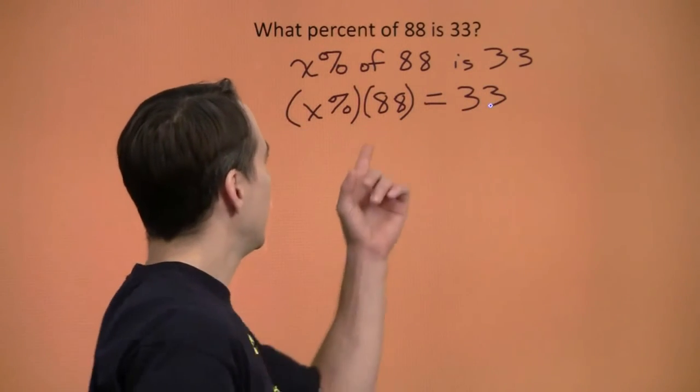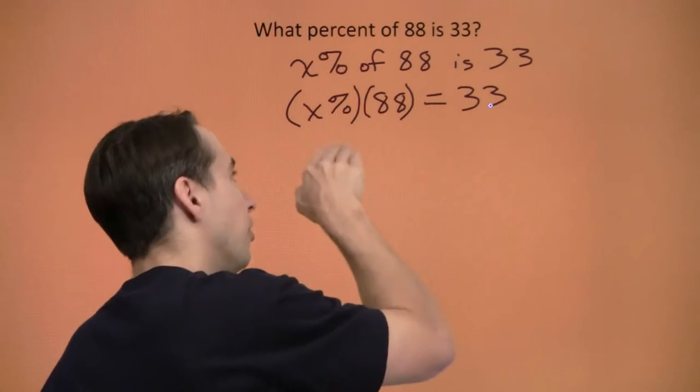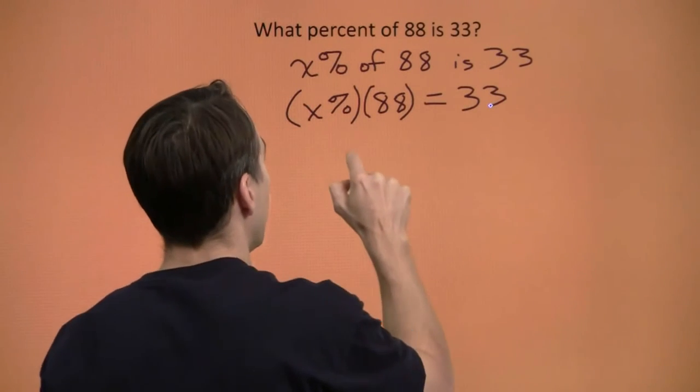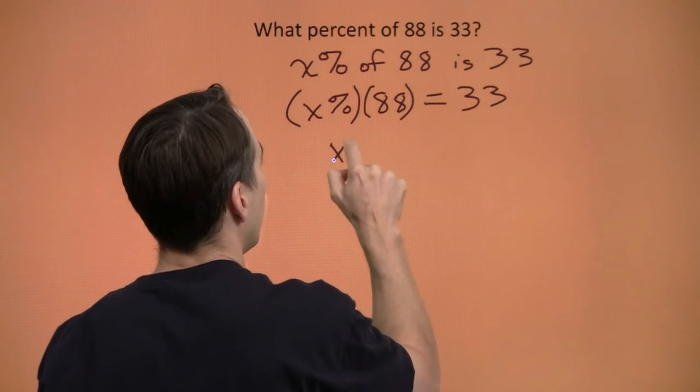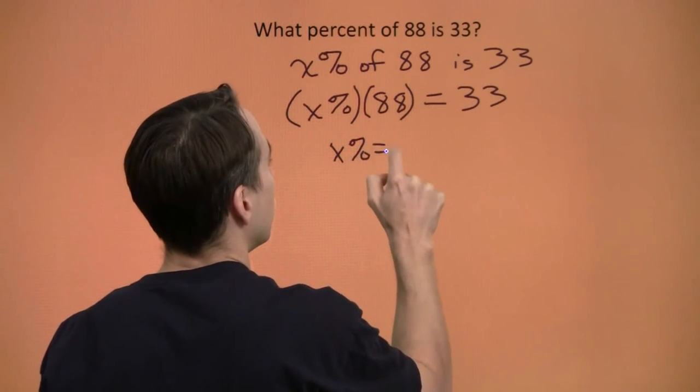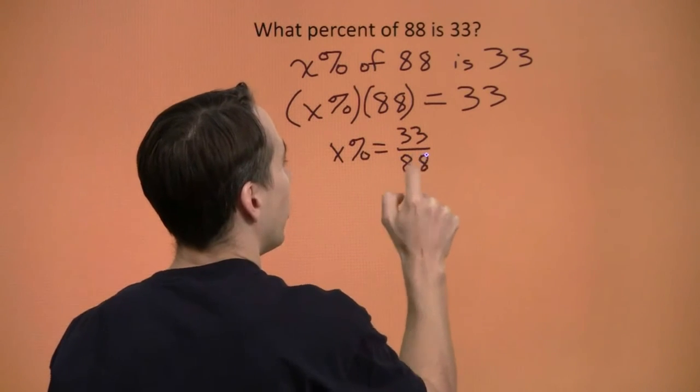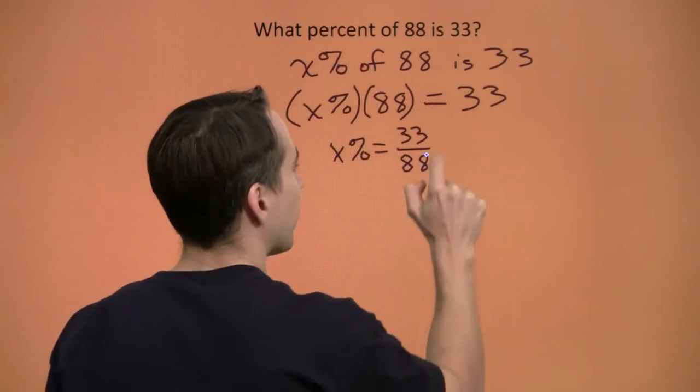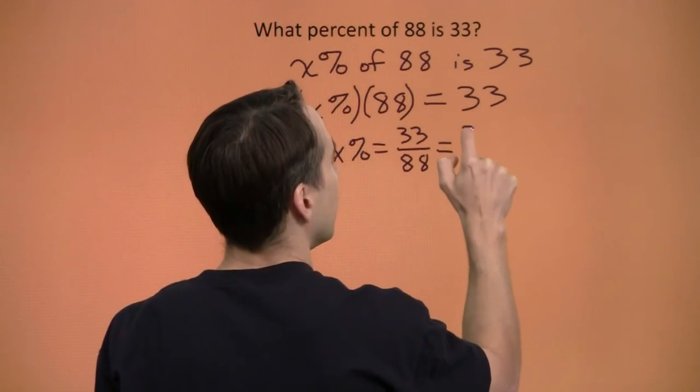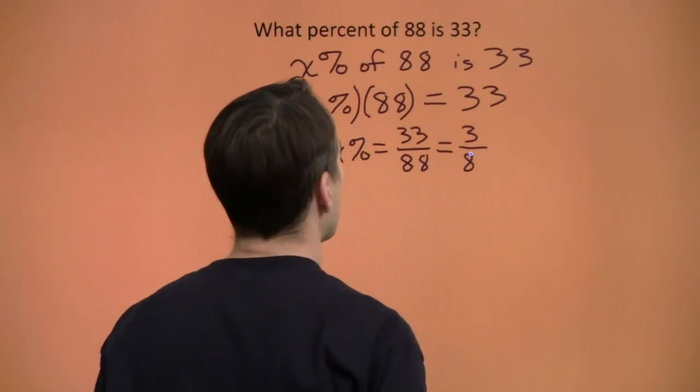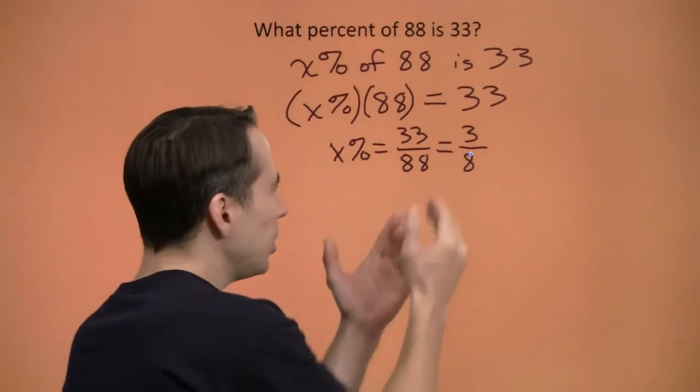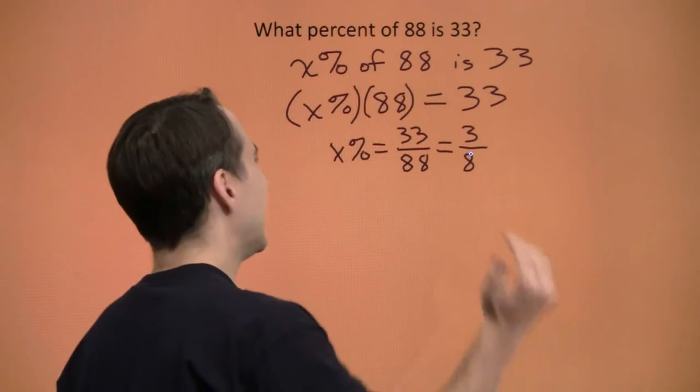So we have x percent of 88 is 33. We'll divide both sides by 88 to get the x percent by itself, and we'll have x percent equals 33 over 88. Knock out the common factor of 11, and we'll have x percent equals 3 eighths. So now we need to turn 3 eighths into a percentage.